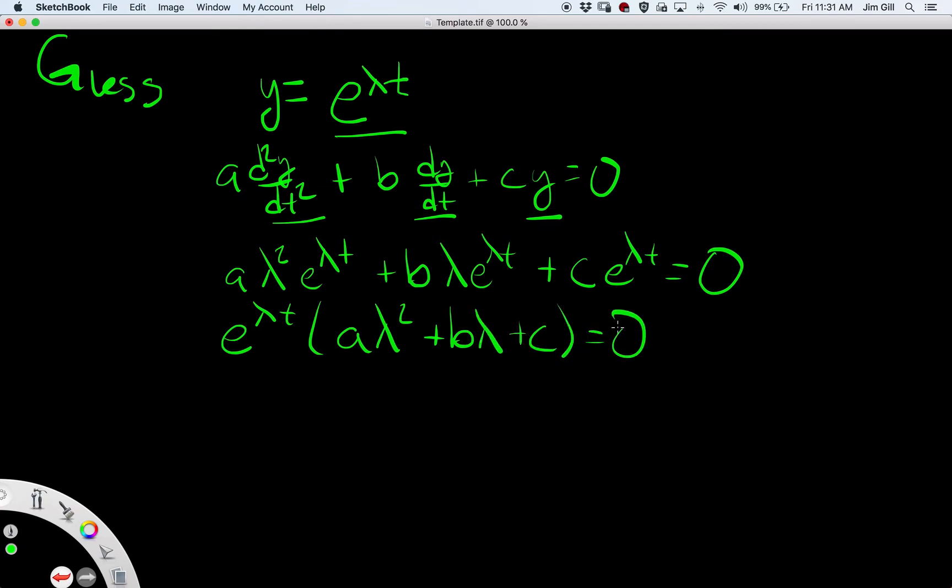And now I have a polynomial in lambda right here that I can set equal to zero and solve for. And the solutions or the roots here are the eigenvalues that we'd get from doing it the traditional way. But we never had to introduce a second variable, we never had to set a determinant equal to zero or anything like that. We just have this polynomial staring at us. The roots are the eigenvalues.